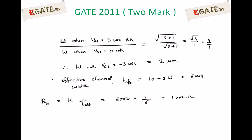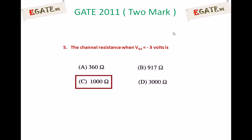The effective channel width at Vgs = minus 3 volts is T_effective equals 10 minus 2 times W = 10 minus 2 times 2 = 10 minus 4 = 6 micrometers. Channel resistance is K times (1 / T_effective) = 6000 times (1/6) = 1000 ohms. Therefore, the channel resistance when Vgs equals minus 3 volts is 1000 ohms, and the correct answer is C.